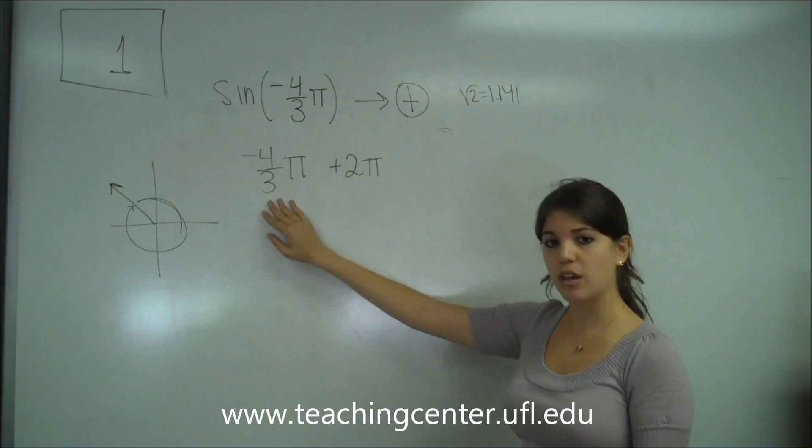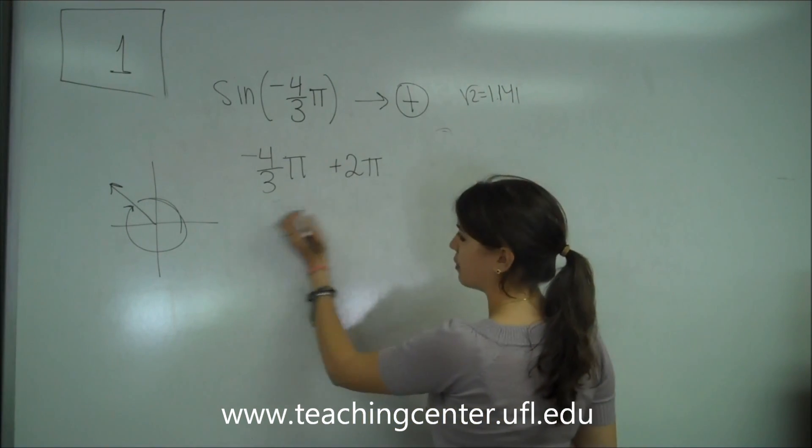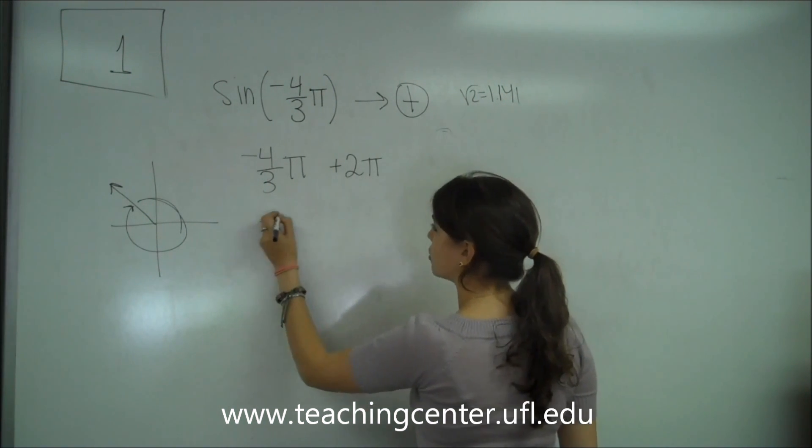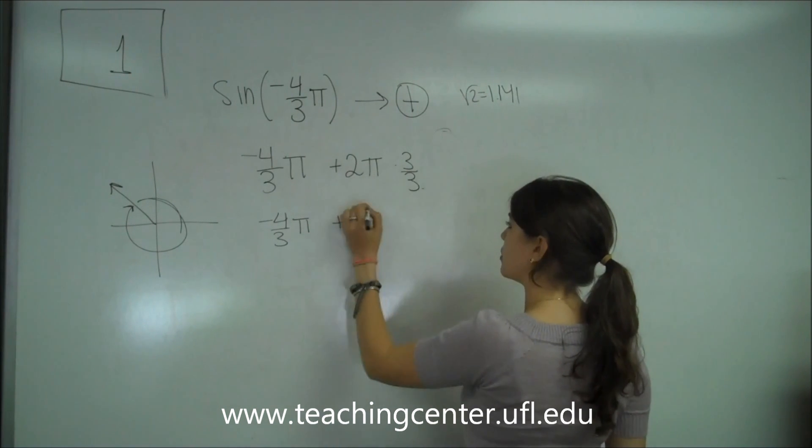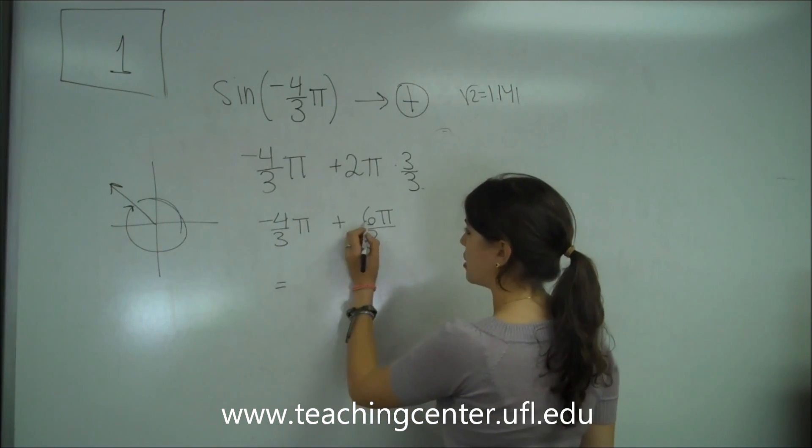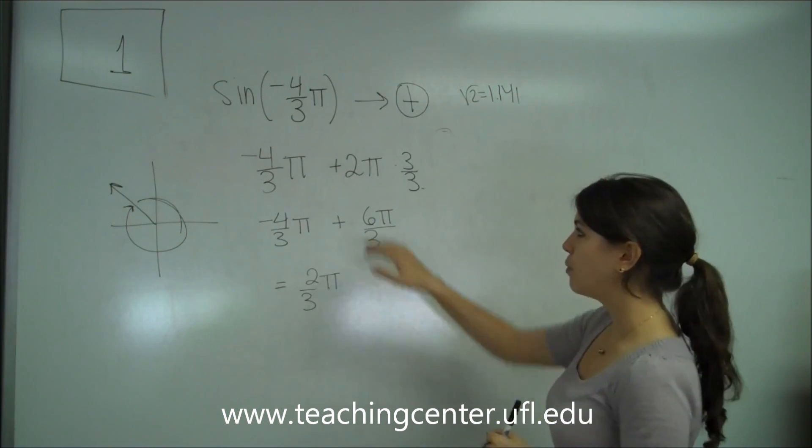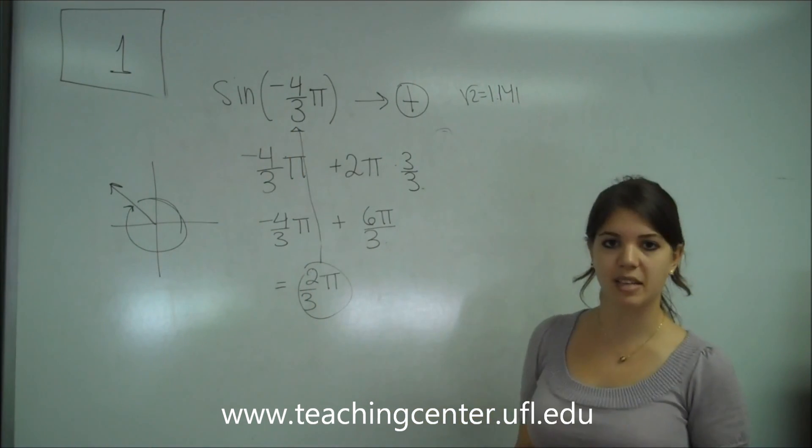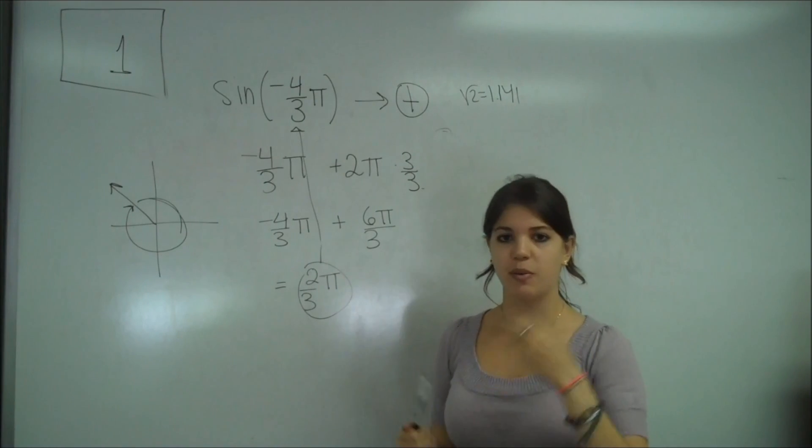So, first of all, we need to convert this so that the denominators are the same. So, we're going to multiply the top and the bottom of this guy by 3. And so, we get 2 times 3 is 6 pi over 3. So, then when we add these, we get positive 6 minus a 4, which is 2 over 3 pi. So, in this case, we only have to do one addition of 2 pi, and we got a positive answer. So, this is what we can plug into there. And it's the same thing. So, sine of negative 4 thirds pi will equal sine of 2 thirds pi. And you can do it that way, as well as the way I explained before.